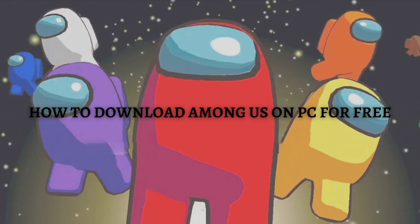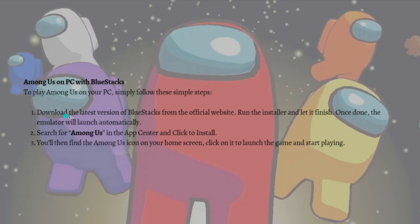The process I am going to show you on how you can download Among Us on your PC for free is downloading it through BlueStacks. To play Among Us on your PC you just need to follow these simple steps. First, just download the latest version of BlueStacks from the official website, then just run the installer and let it finish, and once done the emulator will launch automatically.